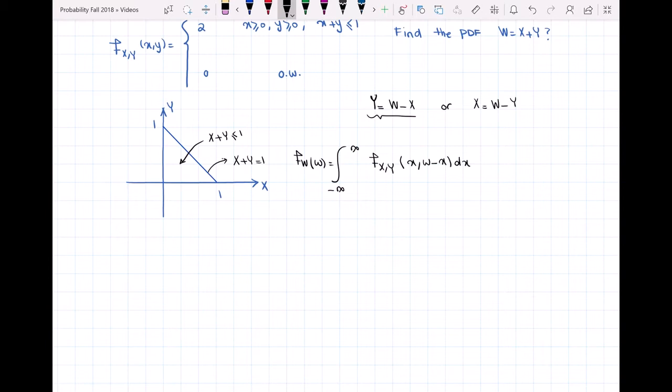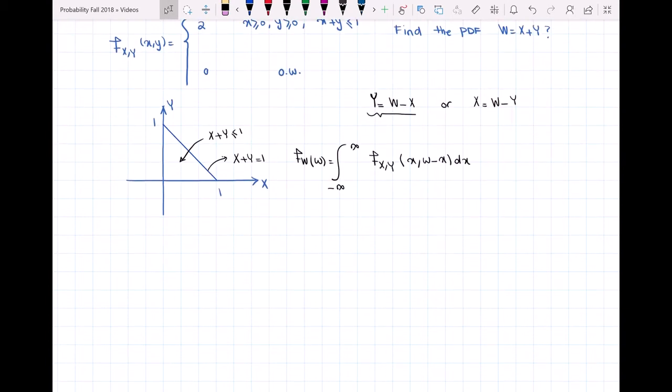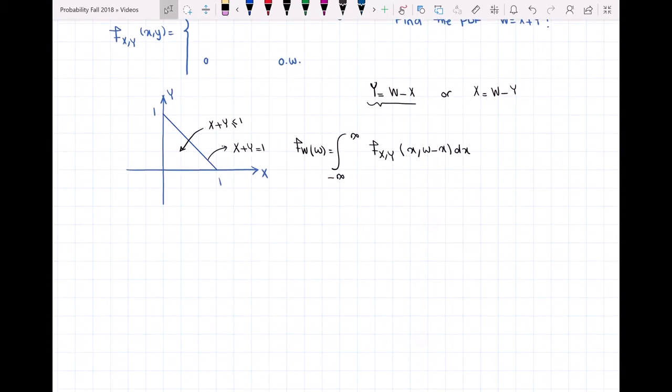Now we have to determine the bounds for this integral. X is greater than 0, Y is greater than 0, and X plus Y is less than or equal to 1. From here, I can say that W is for sure between 0 and 1.